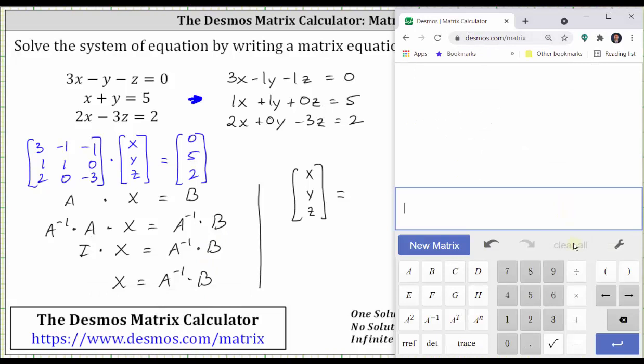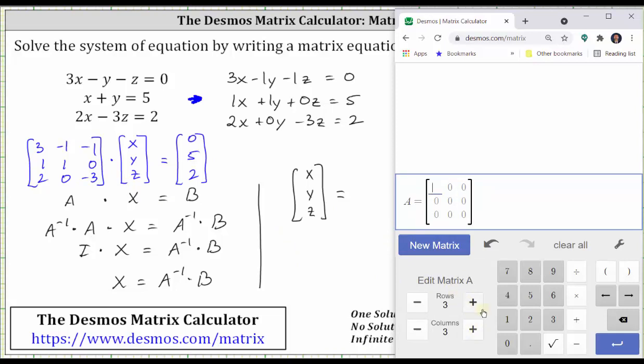Let's first clear all, and now we'll enter matrix A. Click new matrix, change the dimensions to three by three, and enter the elements.